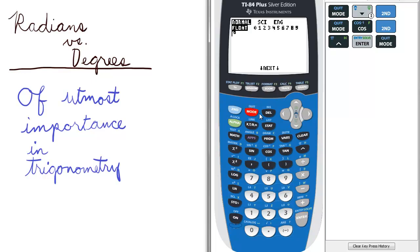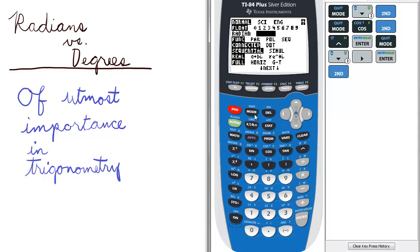Let's go back to the mode, and on the third line, let's choose degrees. Press enter, and quit to the home screen.